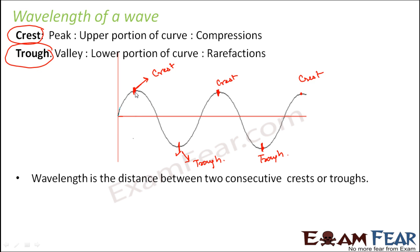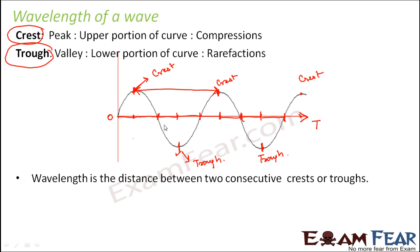Each of these are equal intervals. If you start from zero — let us say this is time — the time here is equal to the time here, and again the time here is equal to the time here. These are equal intervals of time, and that is why it is a periodic motion. Whenever I have given these red dots, they represent equal intervals of time. The distance between two crests is basically the same as the distance between the two troughs — that is wavelength.